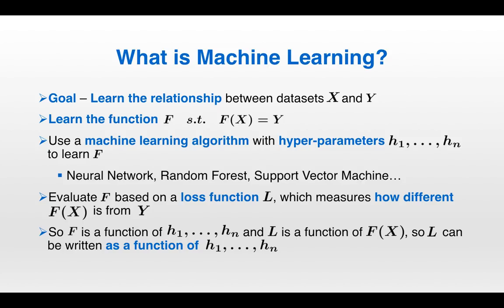Mathematically, we want to learn the function f, such that f of x equals y. And we do this using a machine learning algorithm with hyperparameters h1 to hn, and this is how we learn f. Some examples of machine learning algorithms are the neural network, random forest, and support vector machine. What these algorithms do is they take the hyperparameters and spit out a function f.